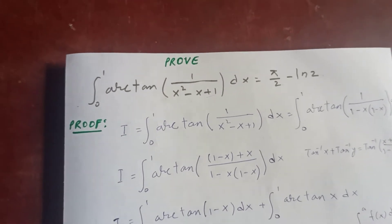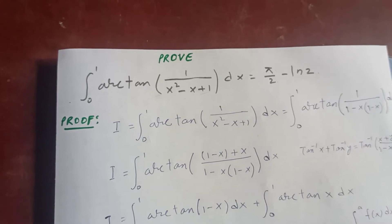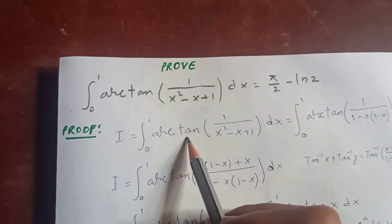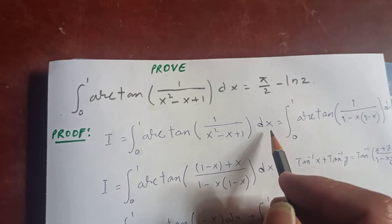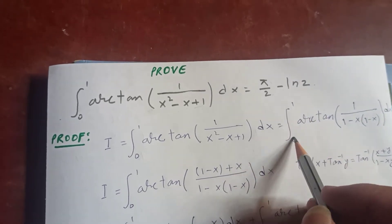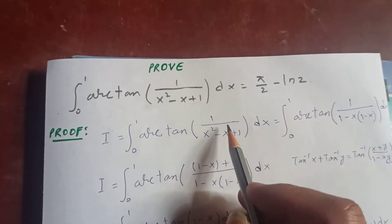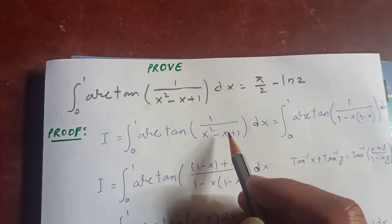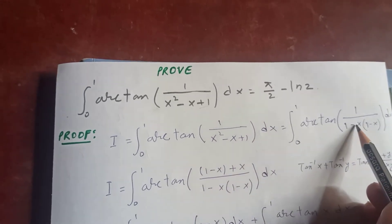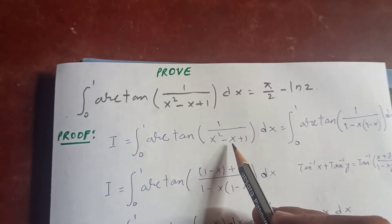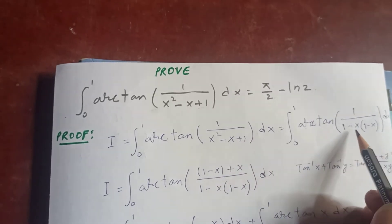Let's call the integral I, which is the integral from 0 to 1 of arctan of 1 over x squared minus x plus 1, dx. We can rearrange the expression: taking out negative x from the denominator gives us 1 minus x, so the argument becomes 1 over x squared minus x plus 1, written as 1 minus x plus x over 1 minus x.